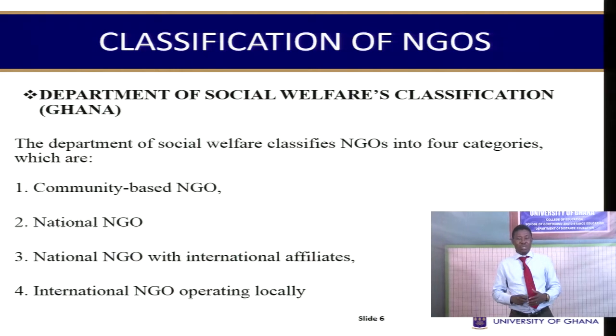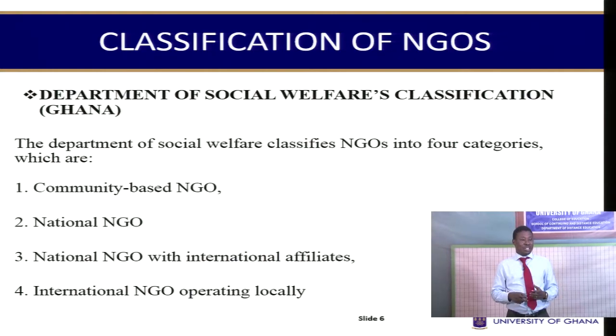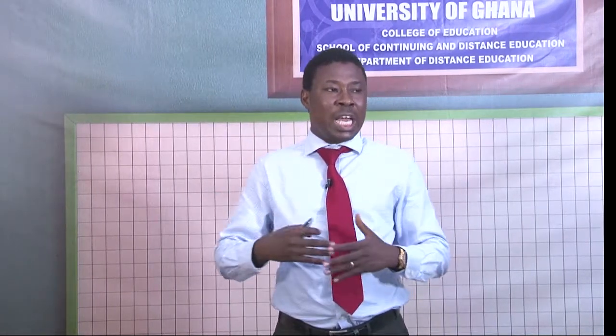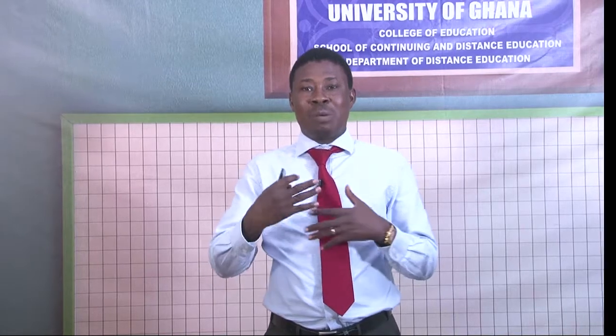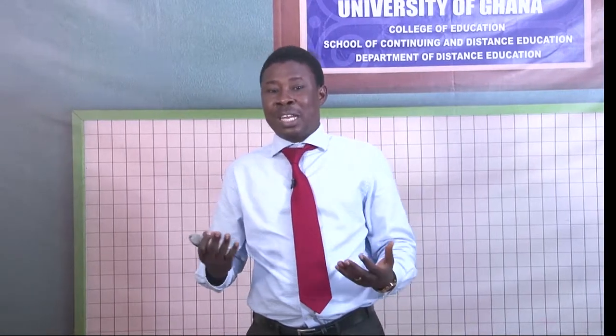The four DSW categories are: community-based NGO, national NGO, and national NGOs with international affiliates — for example, Amasachina in Tamale, which is a national NGO but may have affiliations with international organizations that help them access resources. There are also international NGOs operating locally, such as World Vision and Plan Ghana, which are international NGOs but have local offices and operate in Ghana. That is how the Social Welfare Department classifies NGOs.